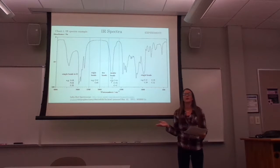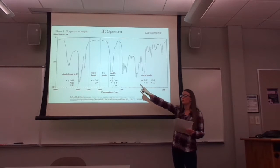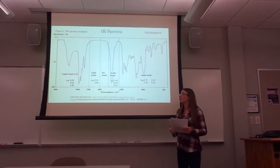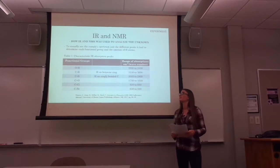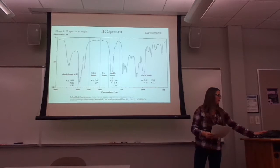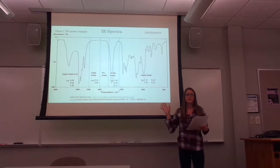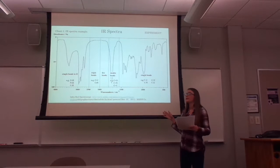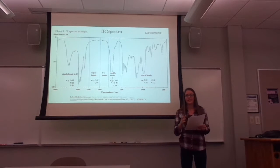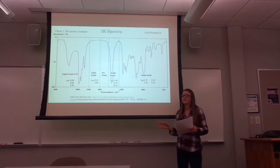This is an example of what an IR spectrum looks like after it's produced. The first peak has a wave number absorption range of about 3,400, which by looking at Table 1 falls under the OH functional group. The other peaks on this spectrum also have functional groups, but in this experiment we're only looking at six specific functional groups, so peaks that don't align with the chart's range can be ignored.